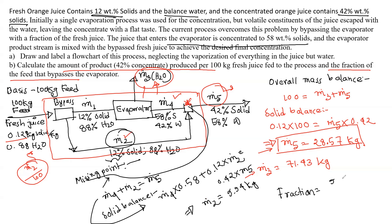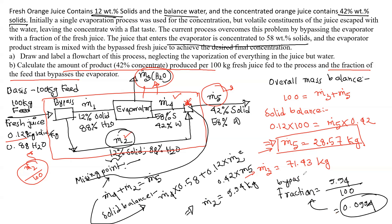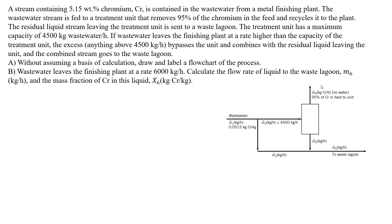The bypass fraction is equal to 9.94 divided by 100, which is 0.0994. This is the bypass fraction. From a flow perspective, the answer is approximately 4.32. This is the actual bypass rate. Therefore, the flowchart answer is confirmed.